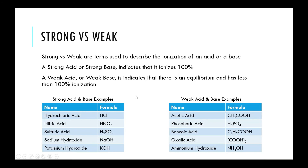Looking at percent ionizations gives relative strength of an acid or base. Strong acids include hydrochloric acid, nitric acid, and sulfuric acid. Strong bases include sodium hydroxide and potassium hydroxide. Examples of weak acids and bases include acetic acid, phosphoric acid, benzoic acid, oxalic acid, and ammonium hydroxide — things that do not ionize 100%.